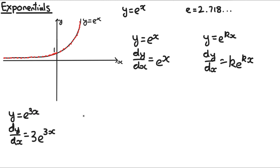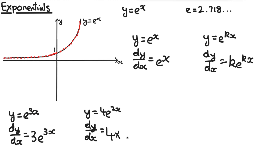If there's a coefficient in front, for example y equals 4e to the power of 2x, then dy/dx is 4 times the derivative of e to the power of 2x, which is 2e to the power of 2x. So therefore dy/dx equals 8e to the power of 2x.